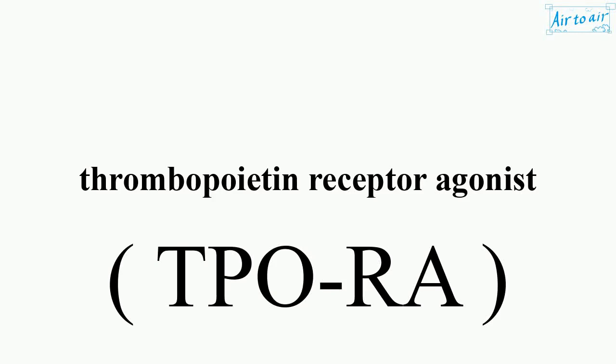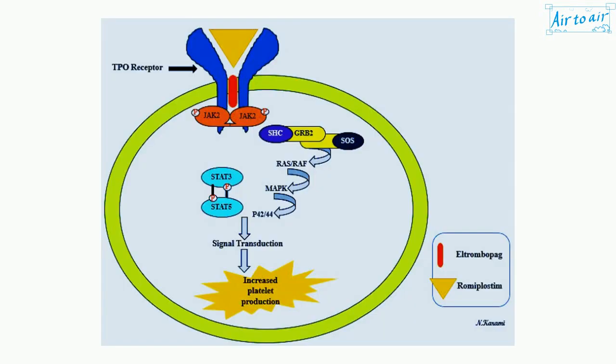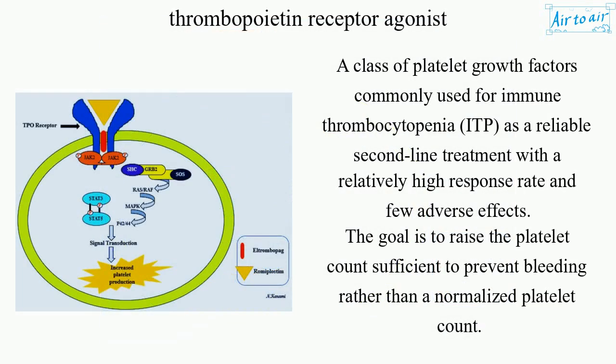Thrombopoietin Receptor Agonists are a class of platelet growth factors commonly used for immune thrombocytopenia (ITP) as a reliable second-line treatment with a relatively high response rate and few adverse effects. The goal is to raise the platelet count sufficient to prevent bleeding, rather than to normalize the platelet count.